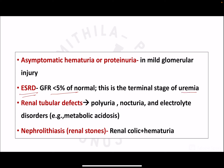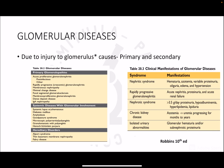Tubular defects commonly manifest as polyuria — increased urine output generally more than two liters per day — nocturia (increased urination at night), and acid-base imbalances. Renal stones characteristically present with renal colic, which is very severe, along with hematuria — red blood cells appearing in the urine.